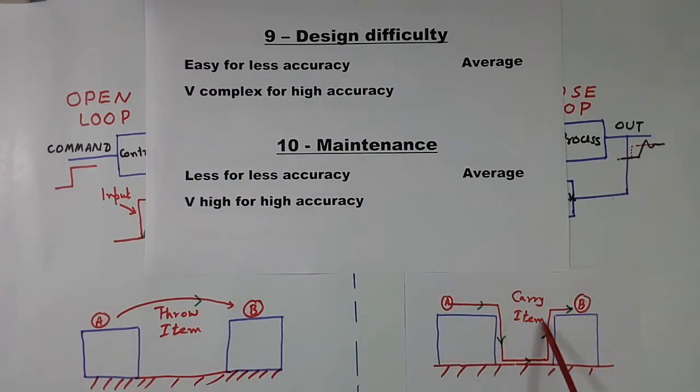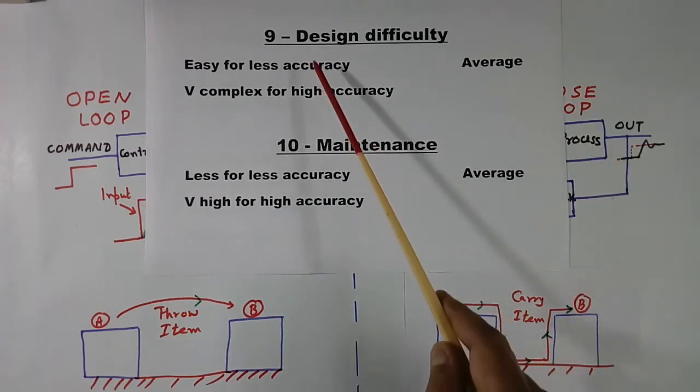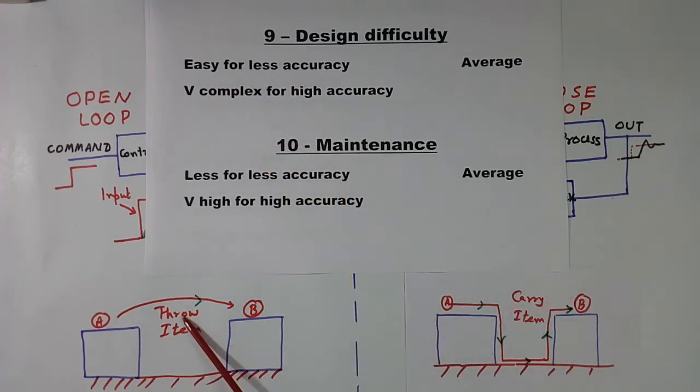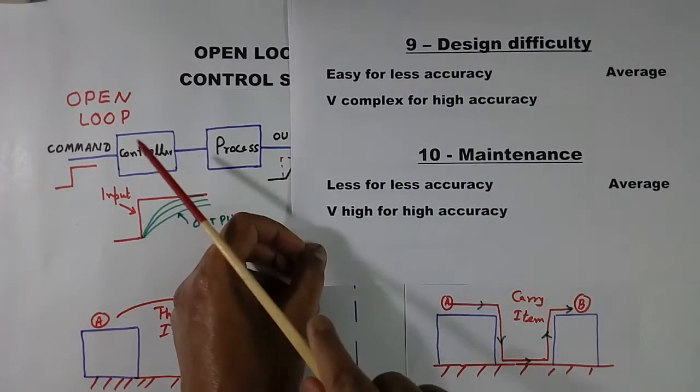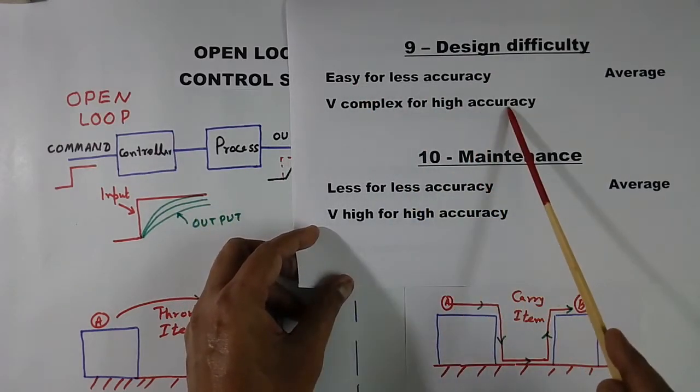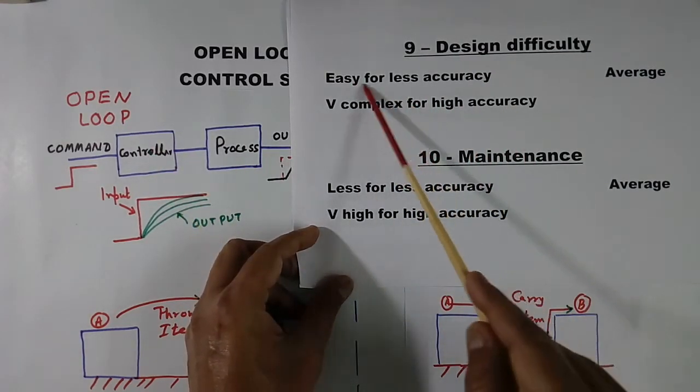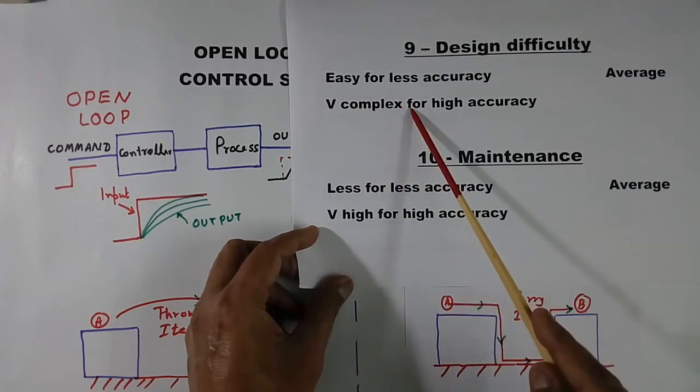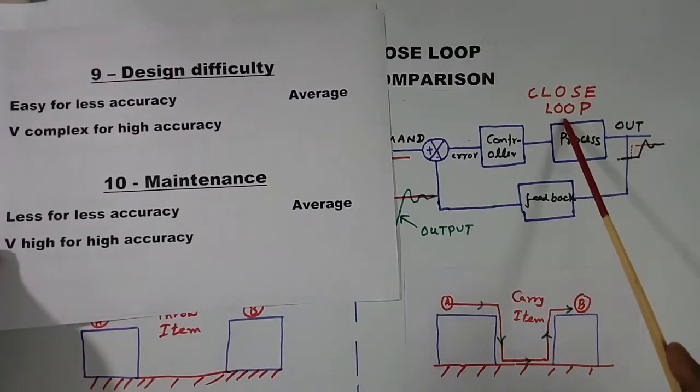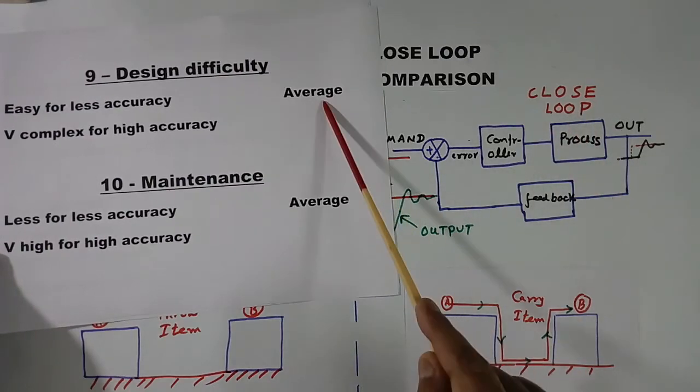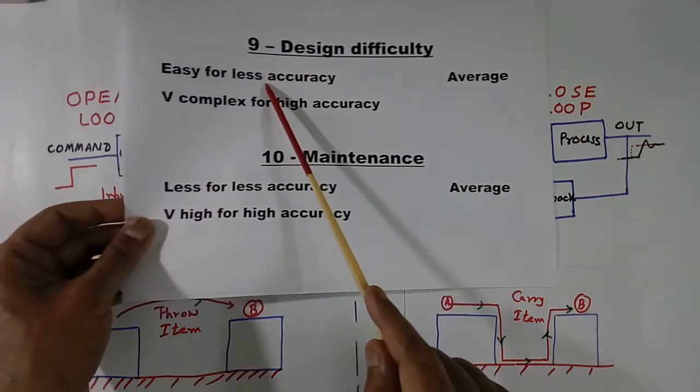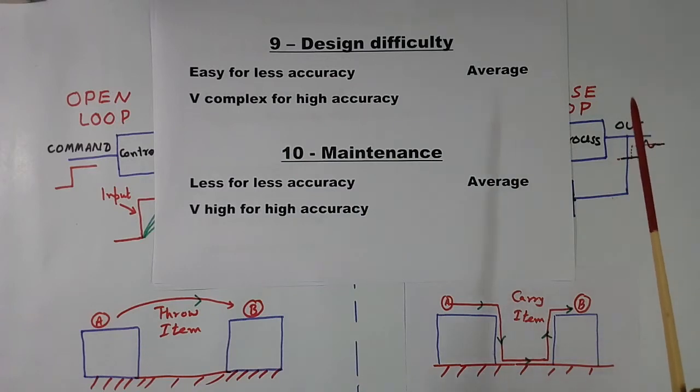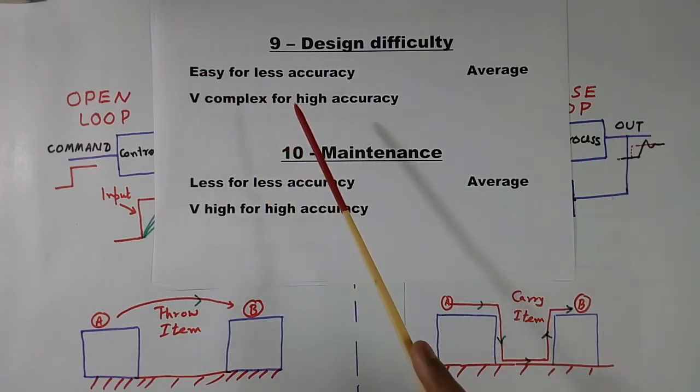Design difficulty. If we assume this is average, or this is average, then for less accuracy, this is easy. Here, designing control is easy. For high accuracy, designing control is very complex, compared to closed loop system. Assuming closed loop is average, it is all comparison. There is nothing like easy or difficult. I am telling again and again, easy and difficult is always compared with something.